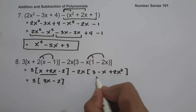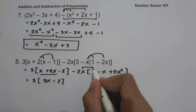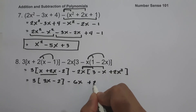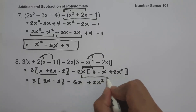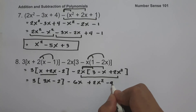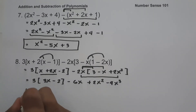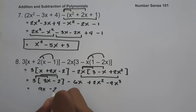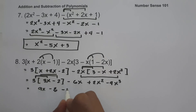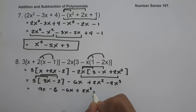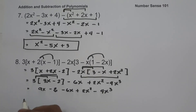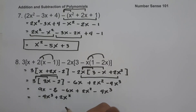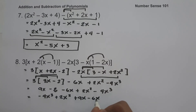Now we distribute: negative 2x times 3 is negative 6x, and negative 2x times negative 2x squared is negative 4x cubed. Then 3 multiplied by 3x is 9x, and 3 multiplied by negative 2 is negative 6. So let us rewrite as negative 4x cubed, plus 2x squared, then 9x minus 6x, minus 6.